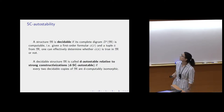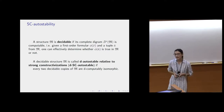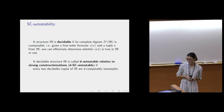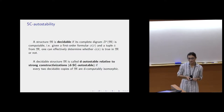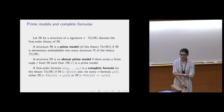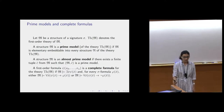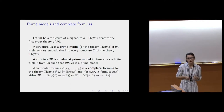Instead of computable structures we may also consider decidable structures and talk about auto-stability relative to them. A structure is decidable if its complete diagram is decidable, meaning we can effectively determine whether any first-order formula—now with quantifiers—is true on elements from the structure. A decidable structure is called D-autostable relative to strong constructivization if every two decidable copies of M are D-computably isomorphic. Such structures are also called D-decidably categorical. For brevity, I will say just D-c-autostable. When D equals zero, such structures are simply called autostable, and there exists a very nice criterion for autostable structures.